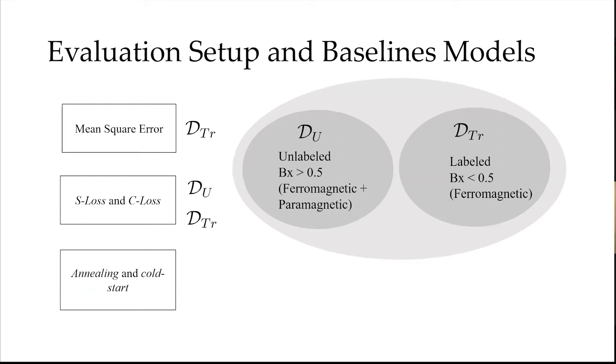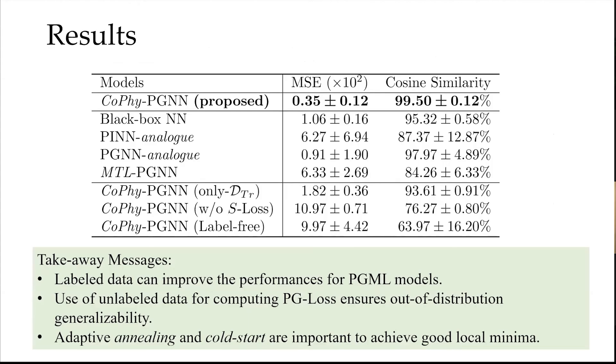Here's a review about what we have for the training set and the test set. We trained on the D_TR which is labeled B_x smaller than 0.5 which corresponds to a ferromagnetic field, and D_U which corresponds to ferromagnetic and paramagnetic domain. Our loss terms, we're going to have mean square error, S loss and C loss and we are going to apply annealing cold-start in our proposed method.